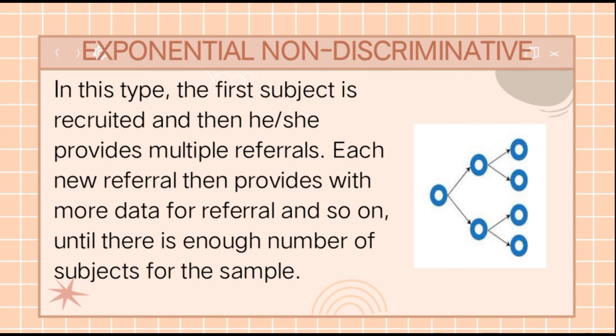Exponential Sampling has two characteristics: the Exponential Non-Discriminative and the Exponential Discriminative Sampling. In the Exponential Non-Discriminative type, the first subject is recruited and then he or she provides multiple referrals. Each new referral then provides more referrals and so on, until there is enough number of subjects for the sample.